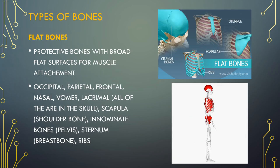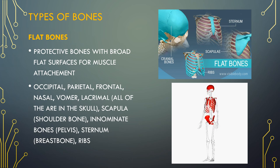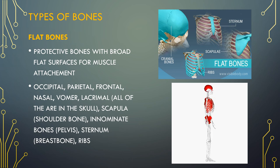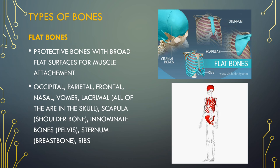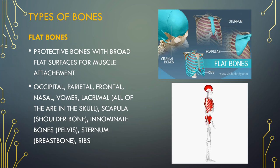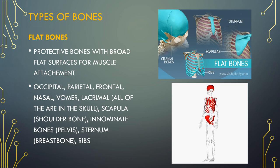The function of flat bones is to protect internal organs such as the brain, heart and pelvic organs. Flat bones are somewhat flattened and can provide protection like a shield. Flat bones can also provide large areas of attachment for muscles. Examples of flat bones include areas of the skull like the occipital, the frontal, the nasal, the vomer, and the breast bone, the pelvis, the sternum and the ribs.